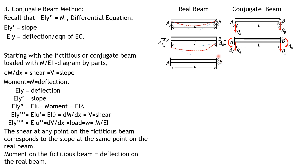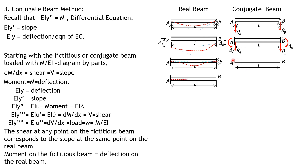For a beam fixed at both A and B in the real beam, there is no rotation and no deflection at either end. Therefore, in the conjugate beam, both A and B should be free — so that there is no shear and no moment at A or B.